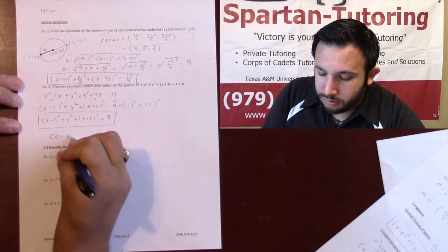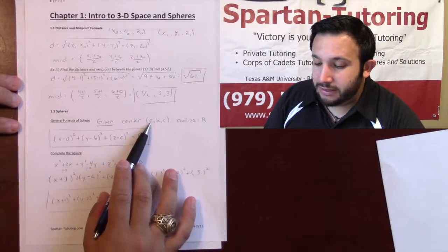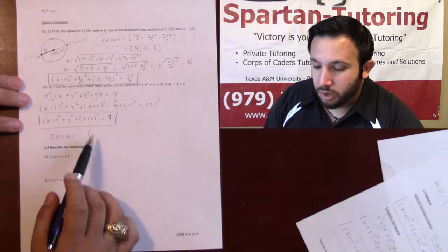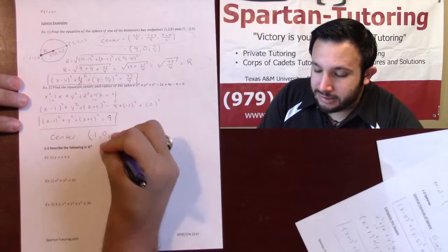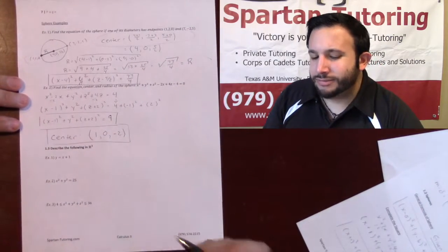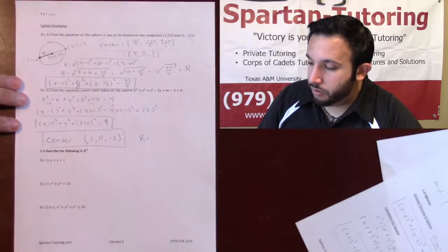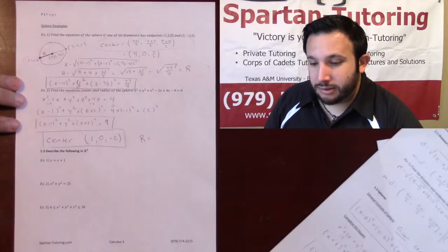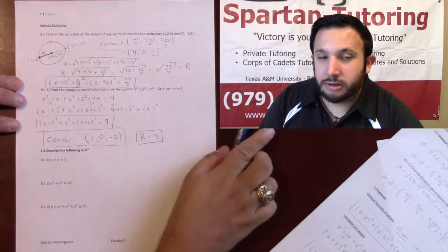As for the center, be careful — because x minus 1 squared means the x-coordinate of the center is positive 1. The inside lies to you, as I like to remember it. For y there's 0 inside, and for z it's negative 2. So the center is (1, 0, negative 2). As for the radius, remember the equation equals r squared, and r squared equals 9, so r equals 3. That's how you deal with spheres.